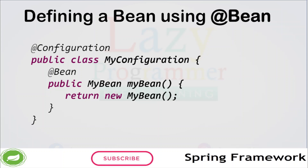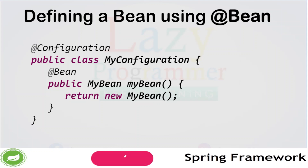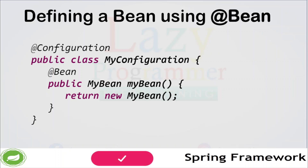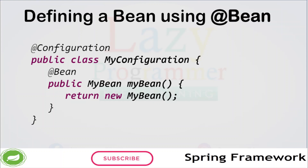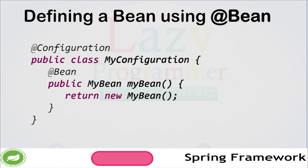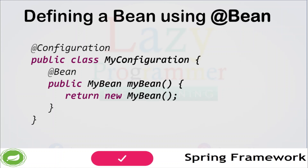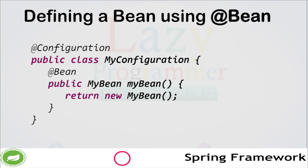For example, we have this myConfiguration class which is annotated with @Configuration so that it will be automatically scanned during application startup. The myBean method is annotated with @Bean and will return an instance of myBean when it is called. This instance will be managed by the Spring IOC container and can be injected into other objects using the @Autowired annotation.